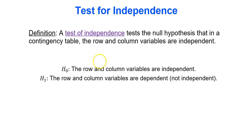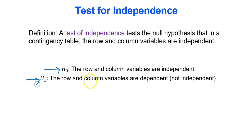A test of independence tests the null hypothesis that in a contingency table, the row and column variables are independent. Independent means they're not related to each other at all. The hypotheses for a test for independence are: the null hypothesis is that the row and column variables are independent, and the alternative hypothesis is that the row and column variables are dependent — that just means not independent. These are always the hypotheses when you run a test for independence.